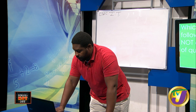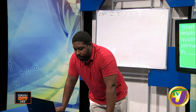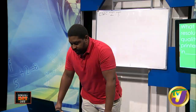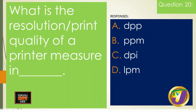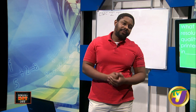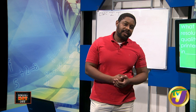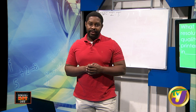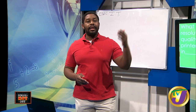Finally: what is the resolution or print quality of a printer measured in? A) DPP, B) PPM, C) DPI, or D) LPM. As mentioned earlier, the resolution of a printer is measured in dots per inch — DPI. That's it for the lesson. You can catch a repeat today at 4pm on JNN and on Saturday between one and five on One Spot Media. Stay healthy, wash your hands — God bless.